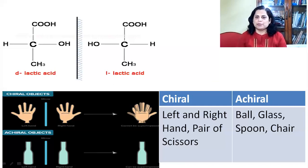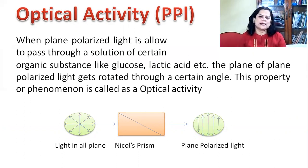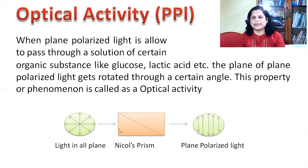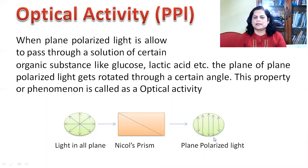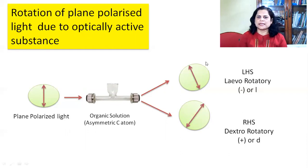To understand optical activity, we first need to look at plane polarized light. There is light which is traveling in all directions — in all planes. When we pass that light through a Nicol's prism, we get light oscillating in only one plane, traveling in a single direction. That light is called plane polarized light. When we pass that plane polarized light through an organic solution containing an asymmetric carbon atom, the plane polarized light rotates its direction towards the left side or the right side. That phenomenon is called optical activity.